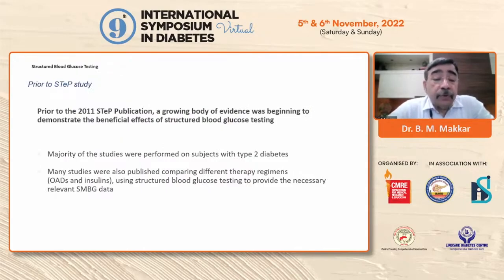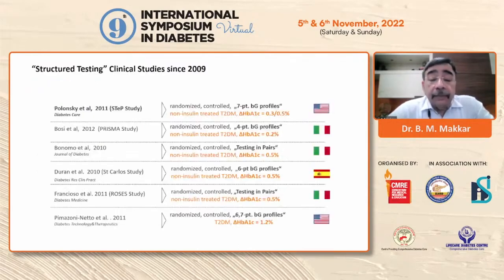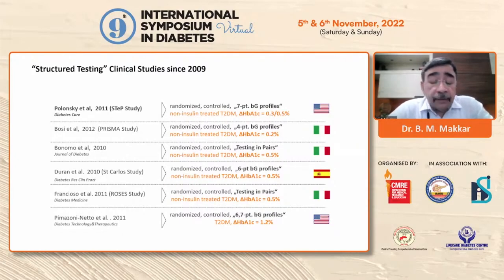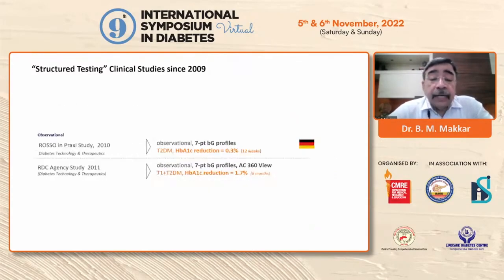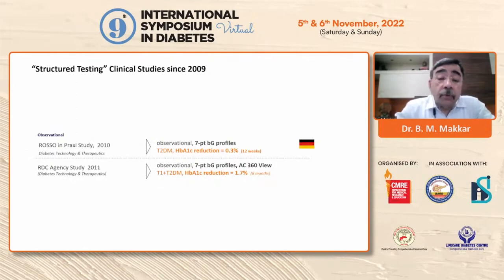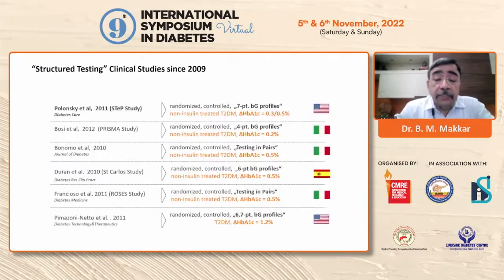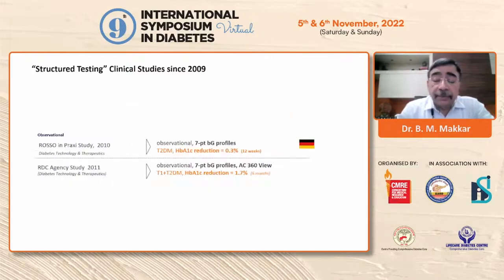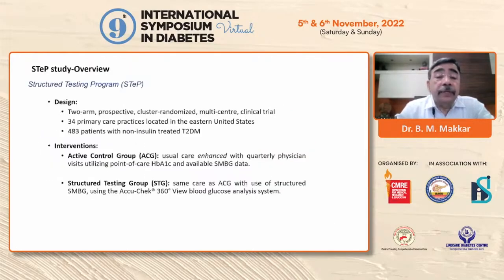Prior to the STEP study, majority of studies were performed on type 2 diabetes and showed that structured SMBG achieved better A1C reduction, varying between 0.3 to 1.2% across different studies. Similar data was shown in studies where patients were treated with oral agents. There were also some studies on patients treated with insulin.